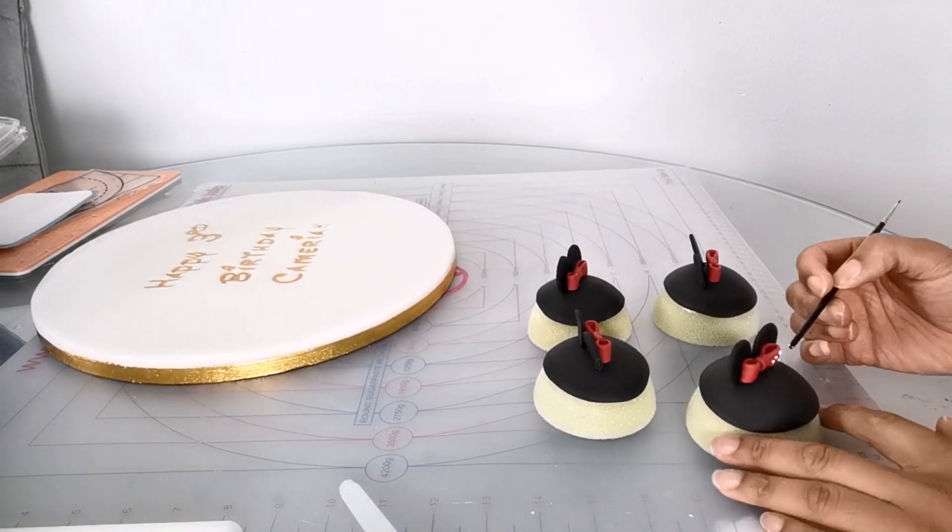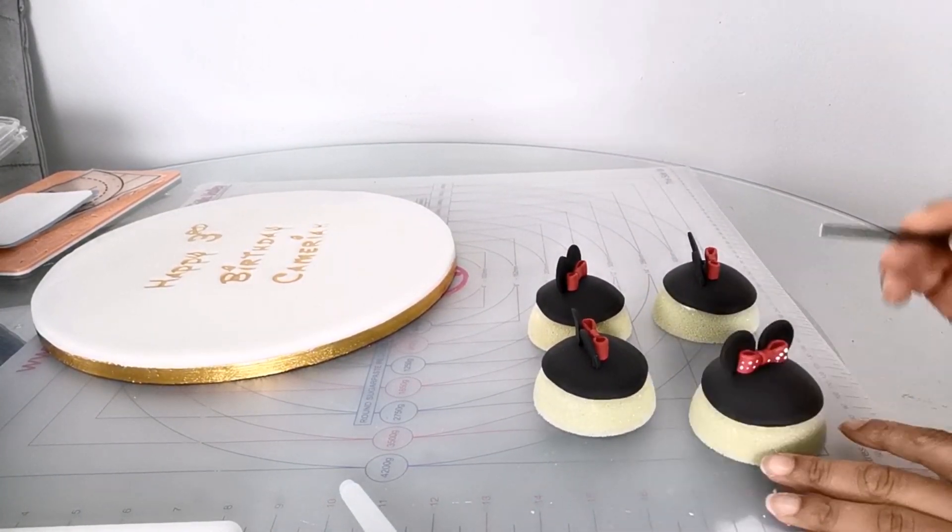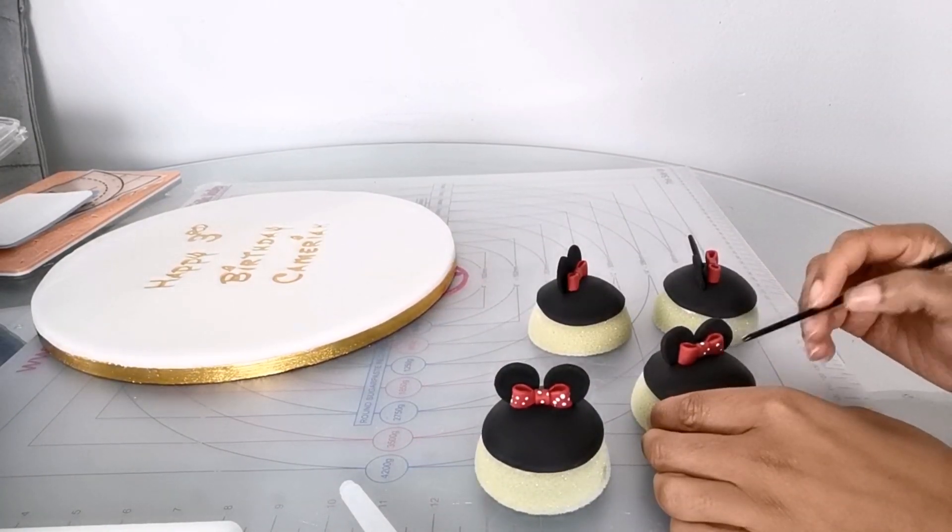Again, I'm just using that white paint and the end of the paintbrush this time, just to add some detail to the bows.